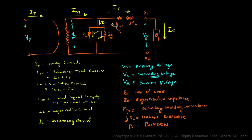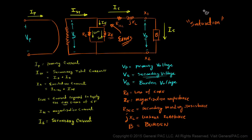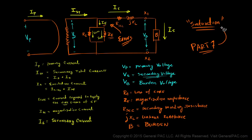The excitation current implies the errors of a current transformer, and those errors are often called saturation. We hear that term a lot — the current transformer is going to saturate. The saturation or errors of a current transformer are modeled by this excitation current flowing through the magnetization branch, which is a non-linear value. In Part 7, we're going to talk about saturation from a CT model's perspective and correlate saturation with the excitation current, the secondary voltage, and the role that burden plays in all of that.